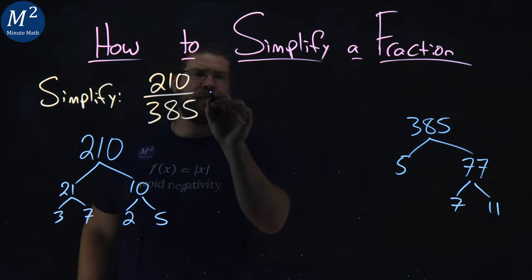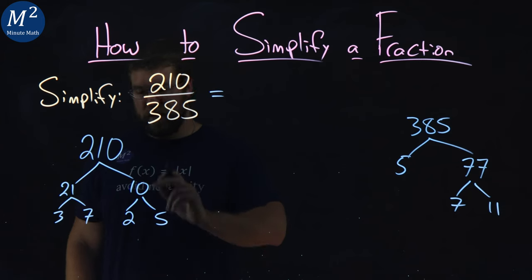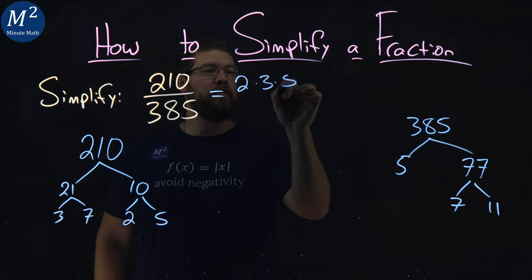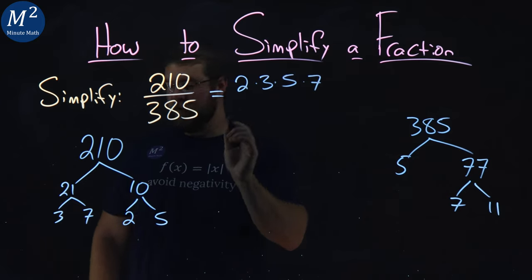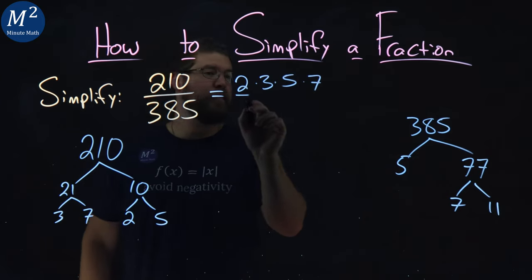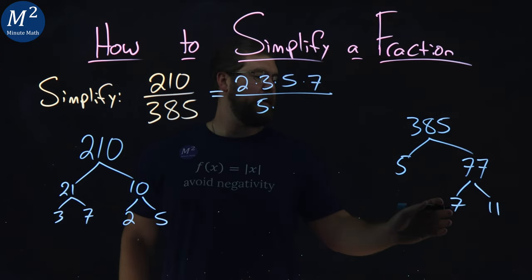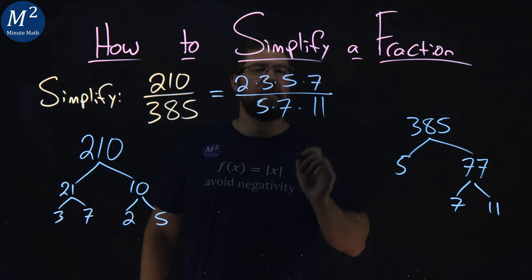Let's rewrite our fraction. Numerator, instead of 210, I can write this as 2 times 3 times 5 times 7, in increasing order. In the denominator, same thing, we have 5 times 7 times 11.